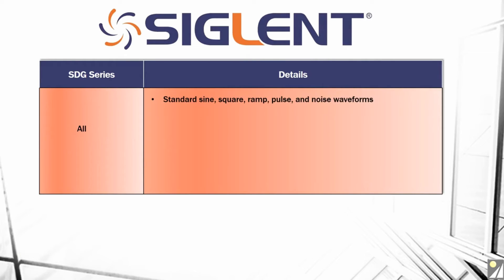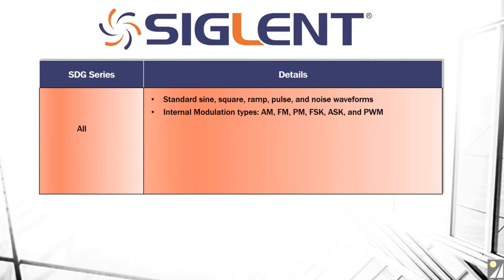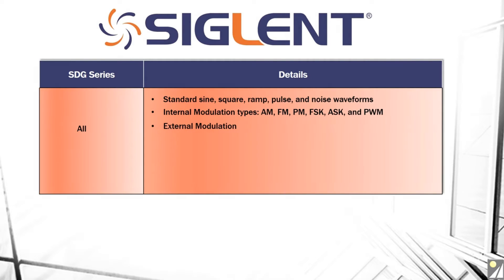They all have standard sine, square, ramp, pulse, and noise waveforms, as well as internal modulation types including AM, FM, PM, FSK, ASK, and pulse width modulation or PWM. We also have external modulation capabilities through a BNC output located on the back of each unit.